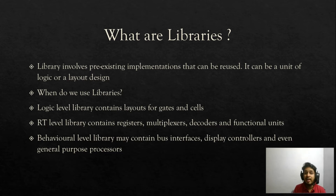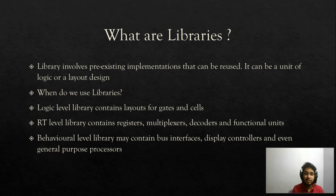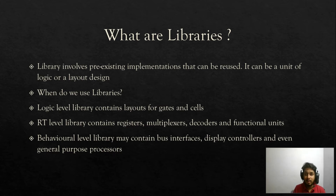That is where libraries and IPs come into the picture. There are companies that design hardware and sell it to others. At different levels of abstraction we have different types of libraries. The logic level library contains layouts of gates and cells — AND, OR, NAND, and different kinds of gates — which are normally called standard cell libraries.